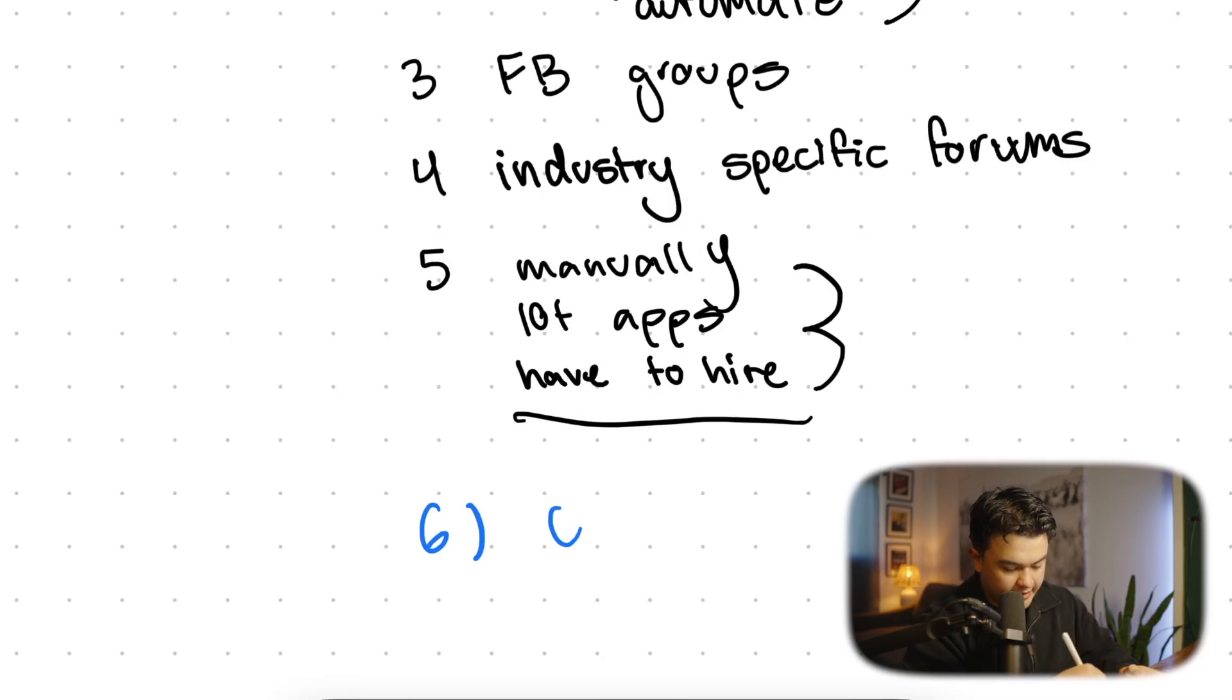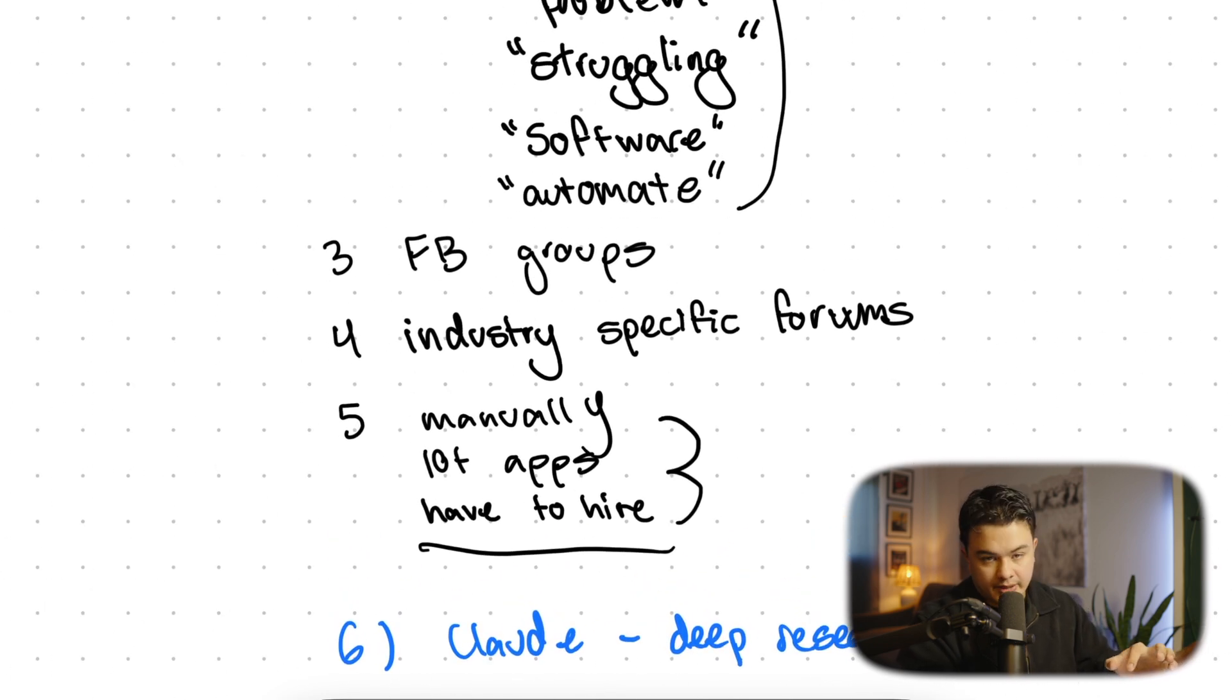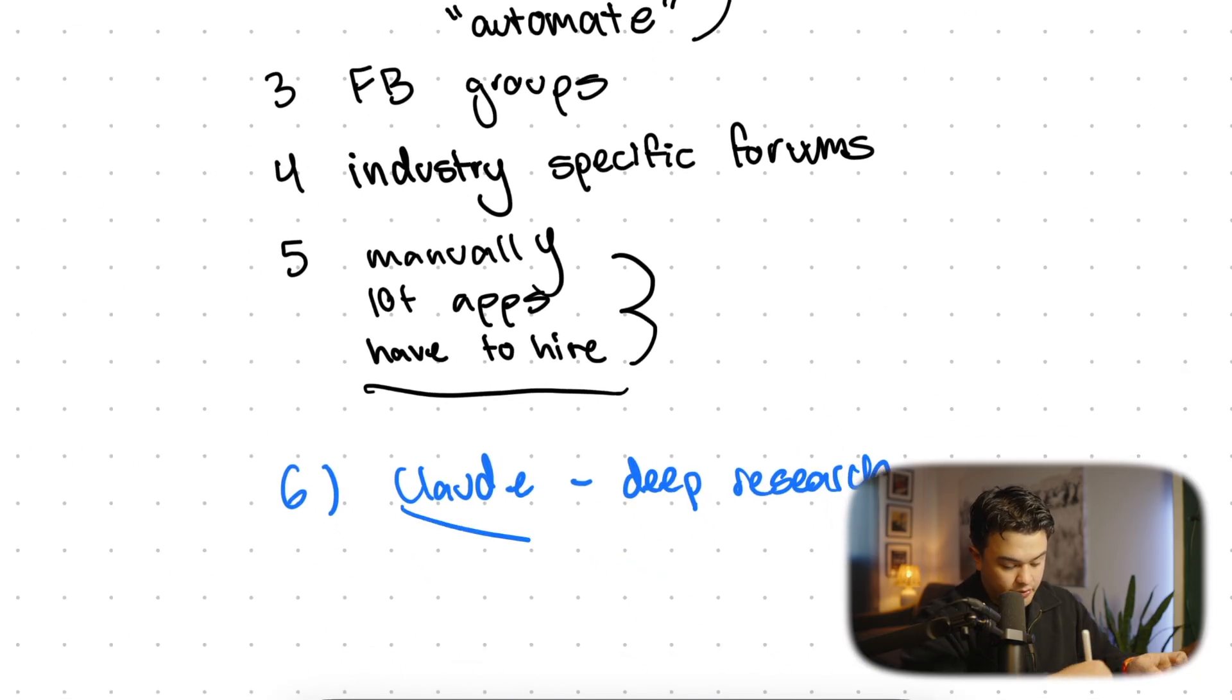A little cheat code is you could have Claude do deep research. I recommend doing this manually alongside Claude because you're going to have a better understanding if you're digging through and reading these posts yourself. But you can put in, this is the niche I want to go after, let's say chiropractors. Find me a list of their 10 most painful problems, rank them by most painful to least painful, and give me software ideas with each problem of a solution that I could build out for them.